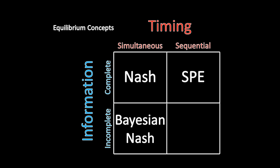The natural question is: what do you do when a game is both sequential and has incomplete information? We need some sort of combination of subgame perfect equilibrium and Bayesian Nash Equilibrium — and that's exactly what we're learning about today: Perfect Bayesian Equilibrium. This lecture will introduce the definition of PBE and go over its important facets, and then in later lectures we'll actually start applying it.